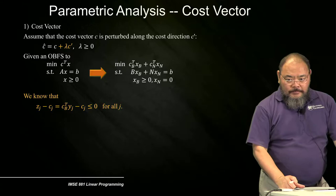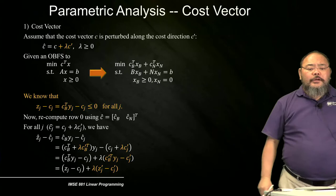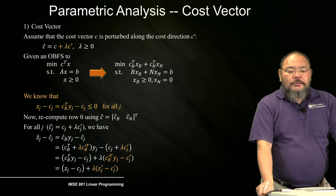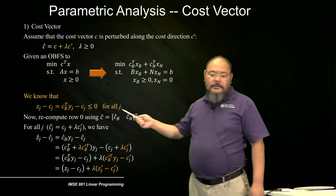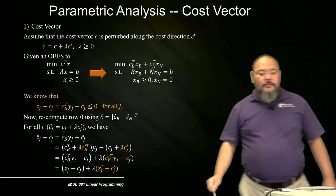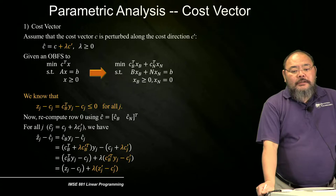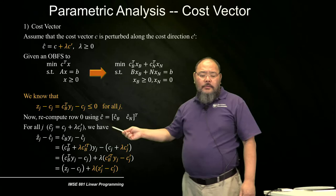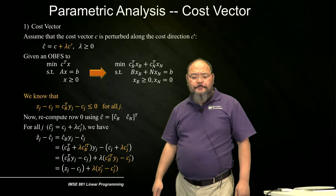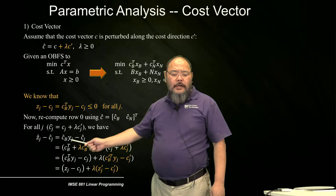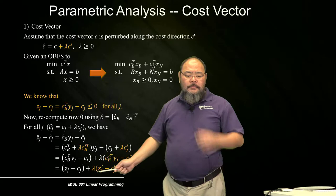To recompute row zero with C prime involved, we use the new cost vector C_hat, which consists of CB_hat and CN_hat, still separated the same way as the original basic and non-basic variable set. For all J, C_hat equals CJ plus lambda times C_prime_J. We then recalculate all ZJ minus C_hat_J using the new cost vector.